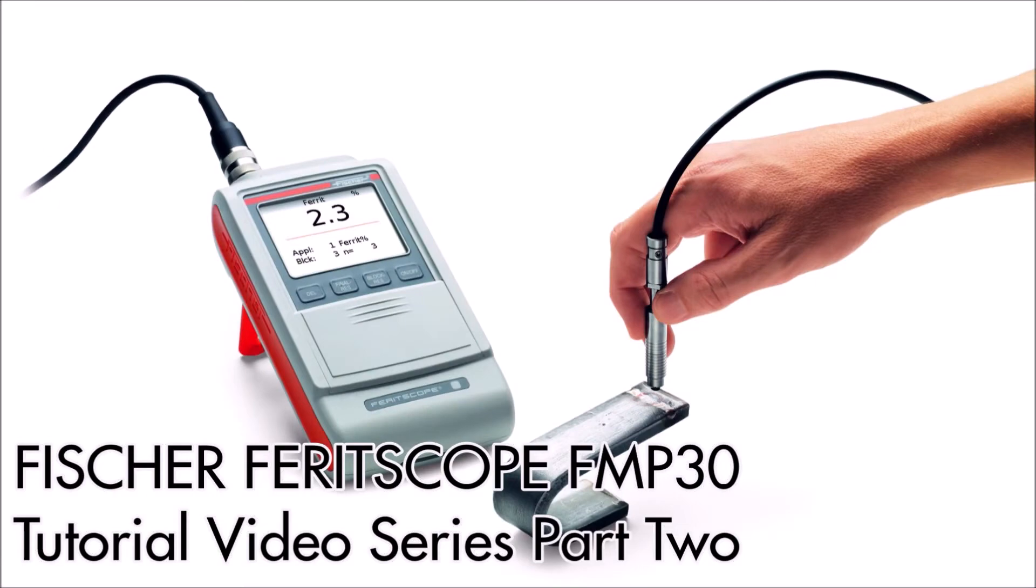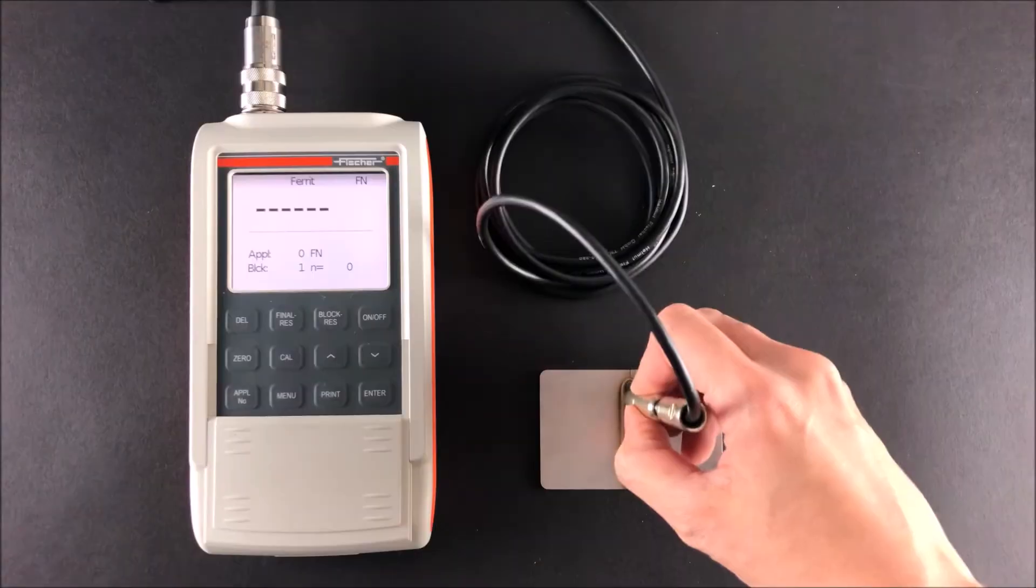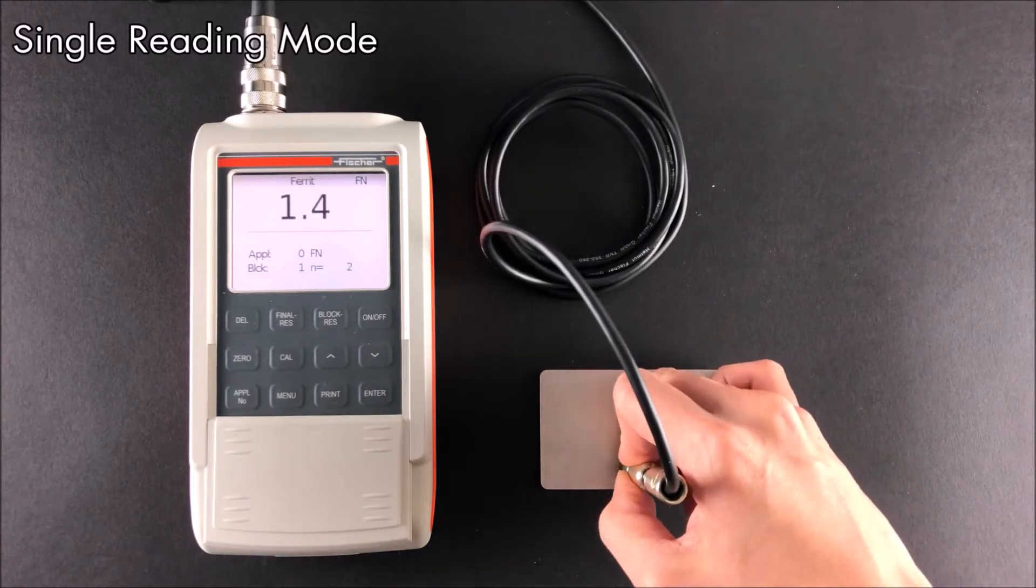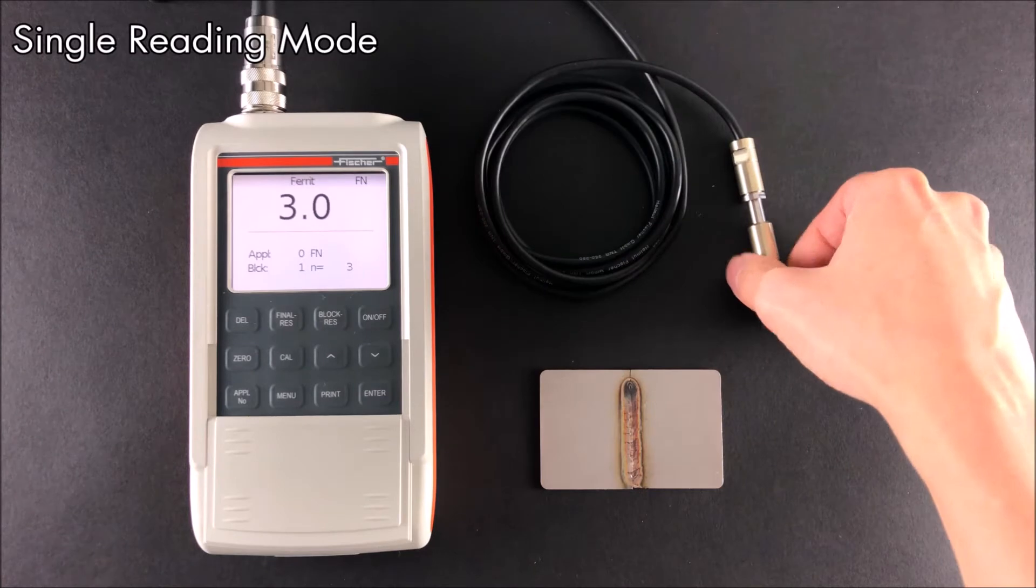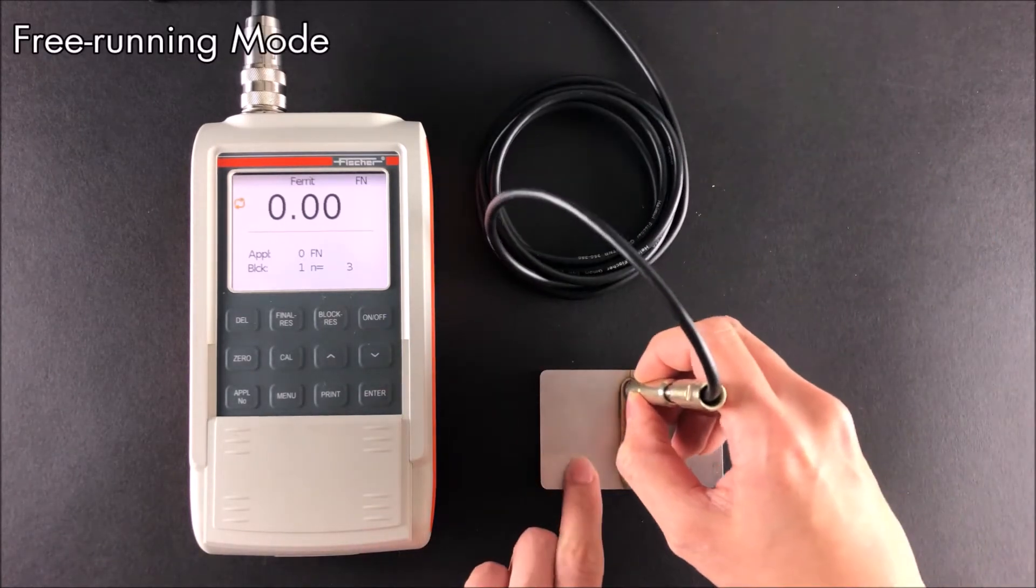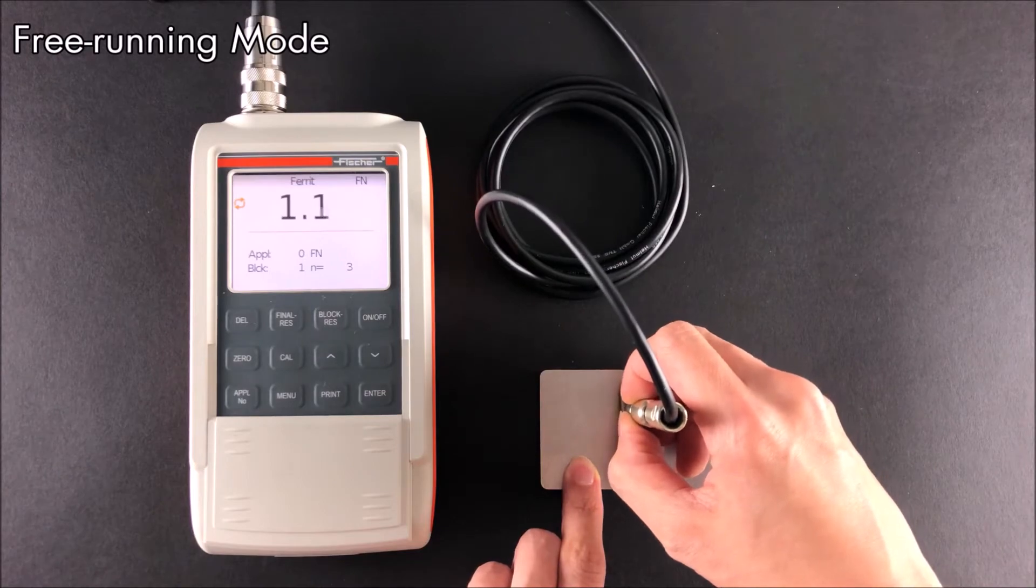Welcome to part 2 of the FerritScope tutorial video series. There are two forms of measurement modes available, including single reading mode, which takes a reading each time the probe is in contact with the surface, and free running mode for continuous scanning of surfaces.